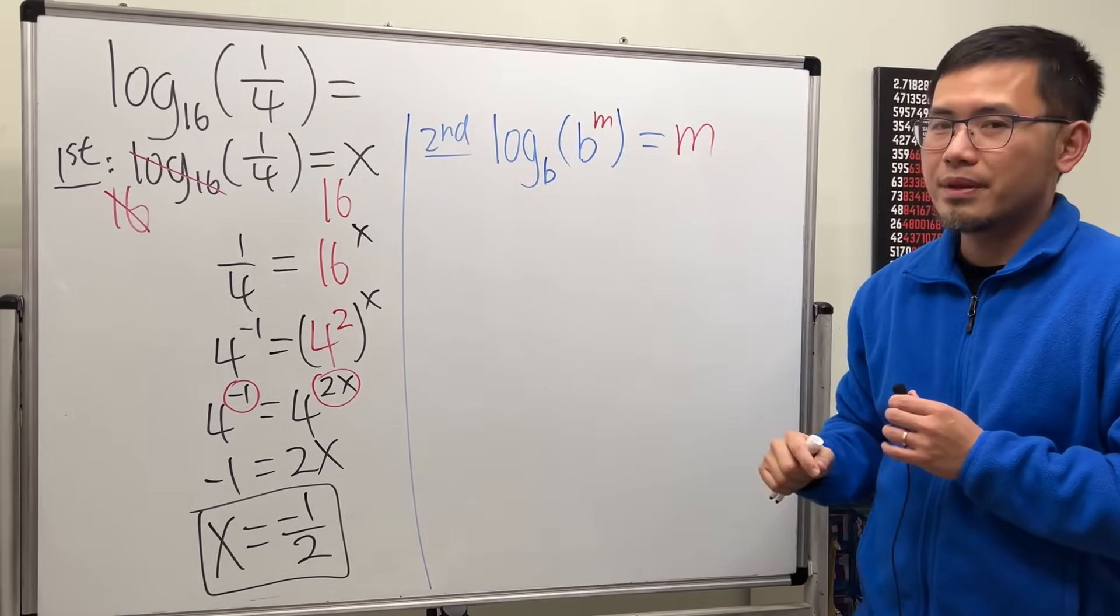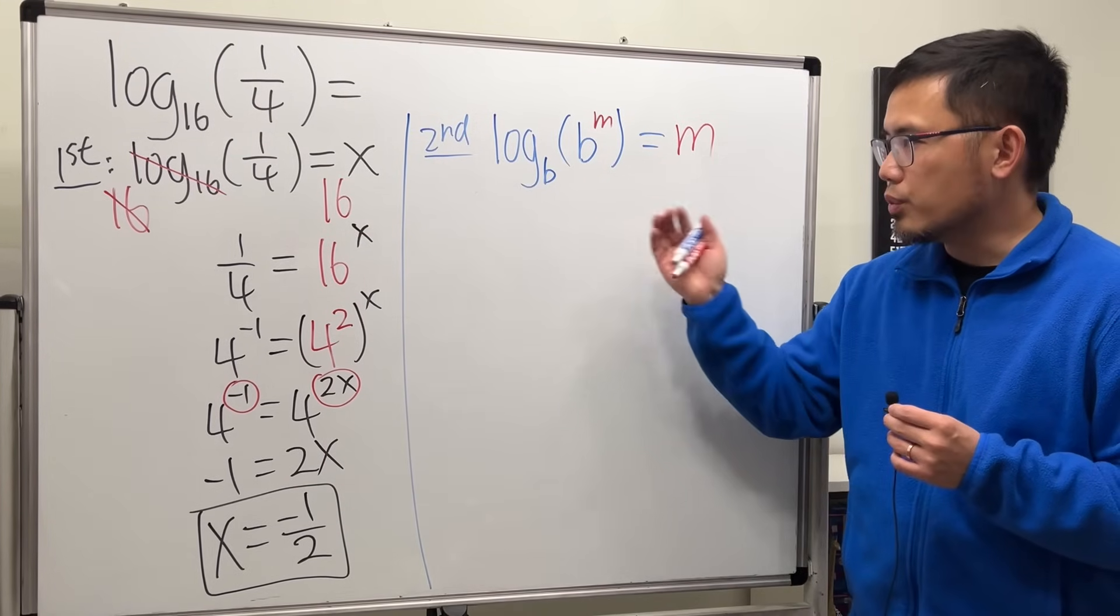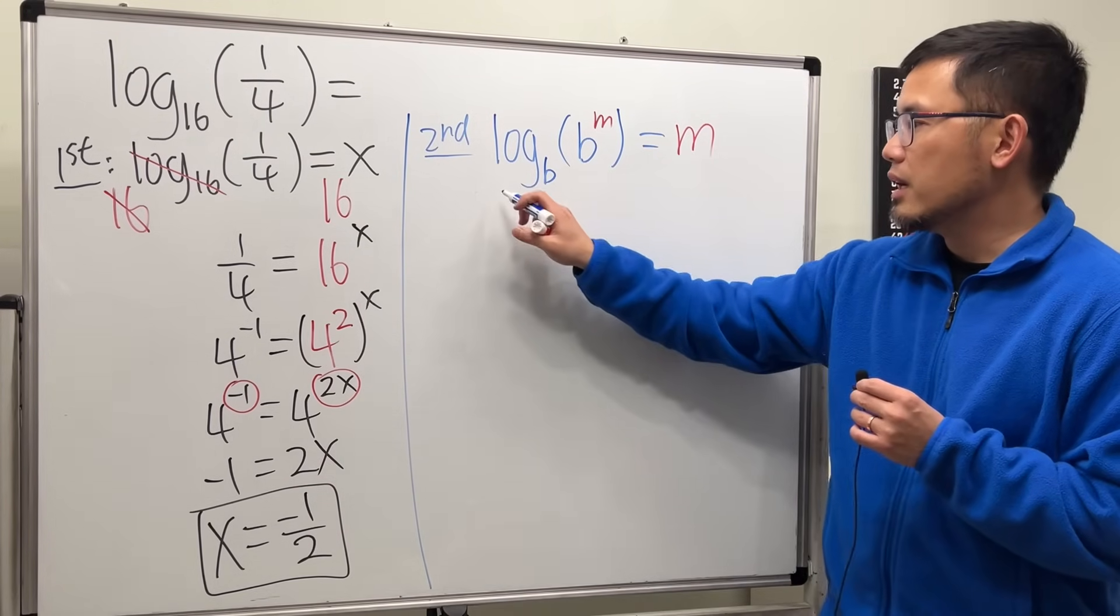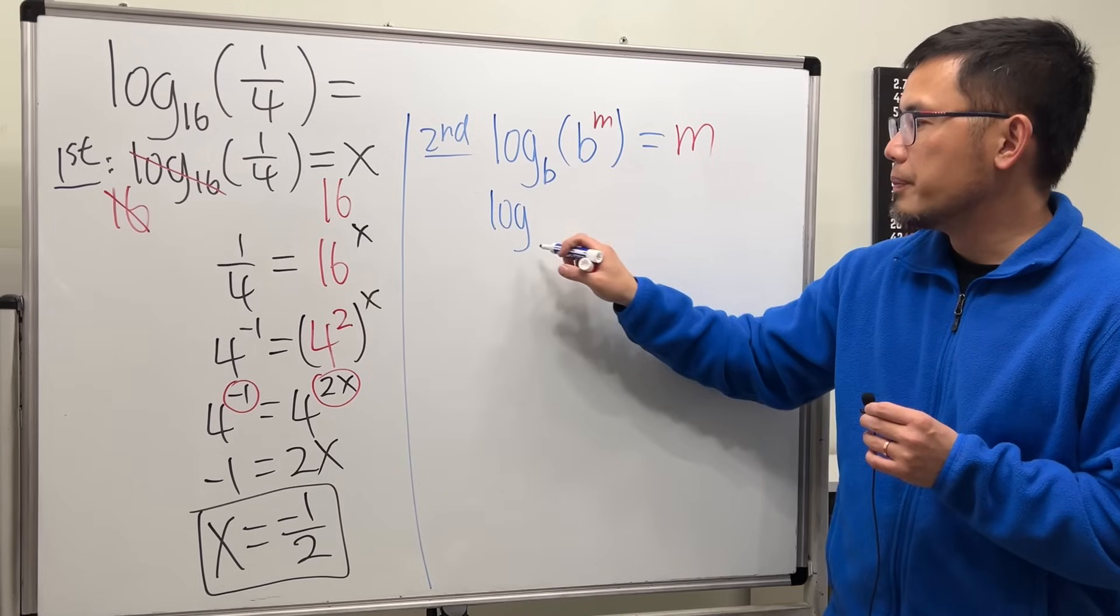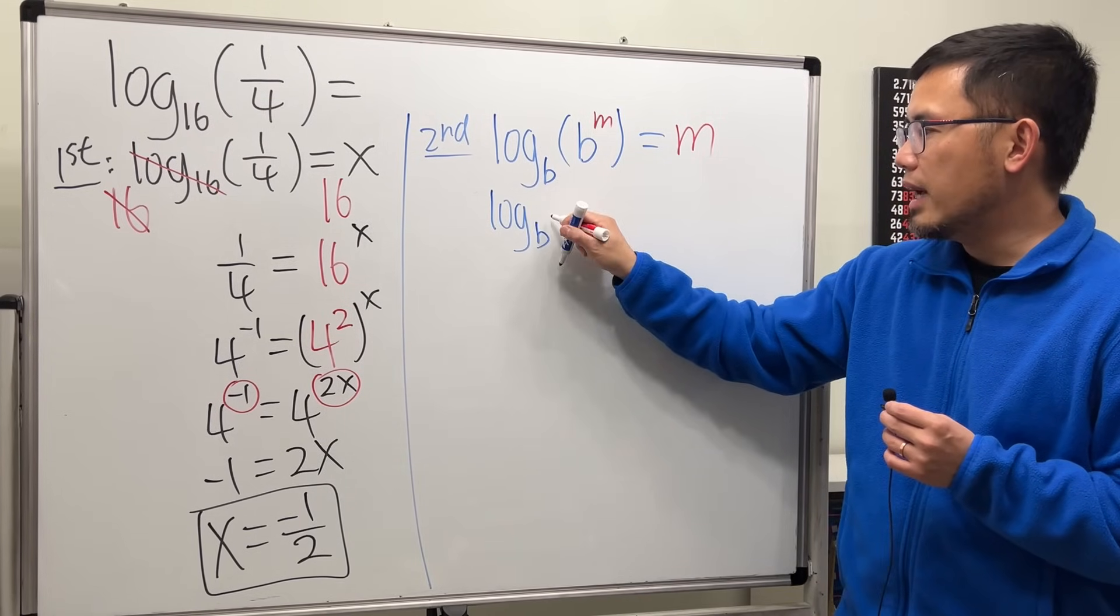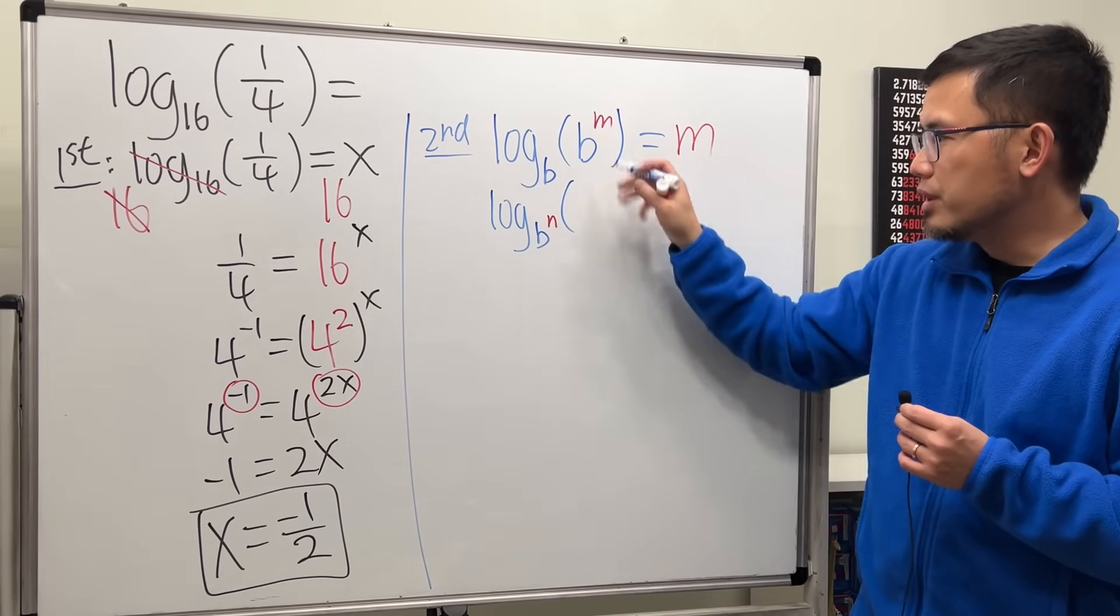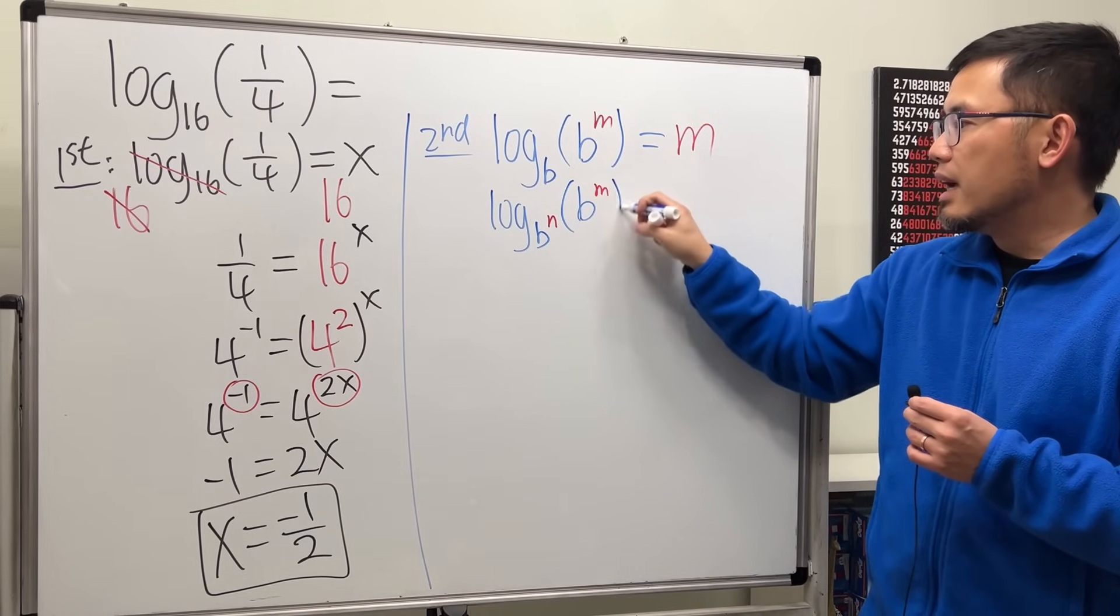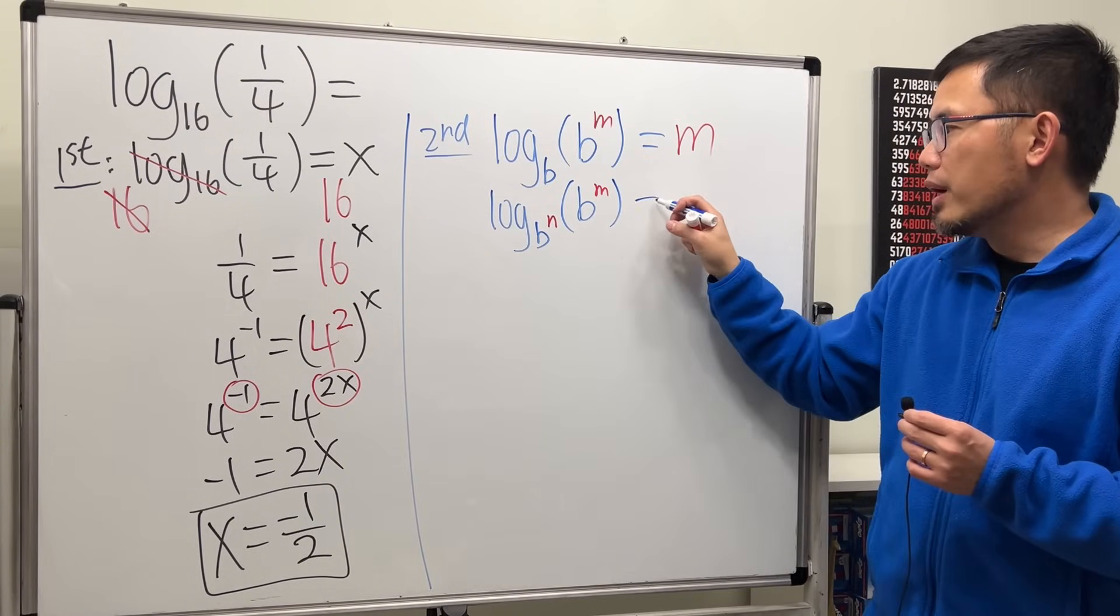Yeah, and this right here is just like the first version, and here will be the more complete version. And that is when we have log, and if the base right here can be written as b to the n, and then the input here we still have b to the m.